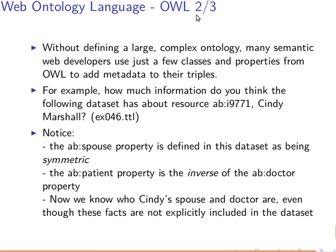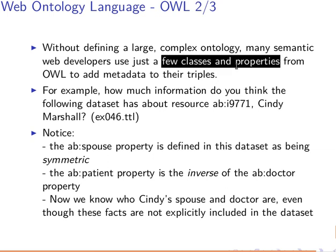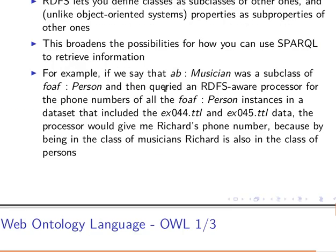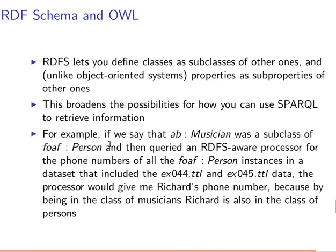Without defining a large complex ontology, many semantic web developers use just a few classes and properties from OWL to add metadata to their triples. Even with using a very small number of classes and properties, we can infer more than that — as we learned in the previous video when we inferred that, if you remember those slides, using the property 'plays instrument'...